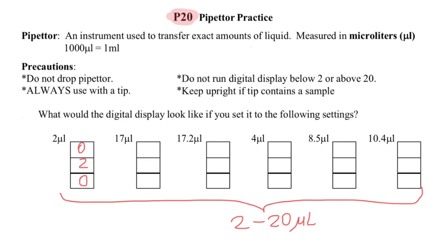Next, 17 microliters would be 1, 7 here and 0 here. It is not 170 microliters, it is 17.0 microliters. 17.2 microliters would be 17.2.